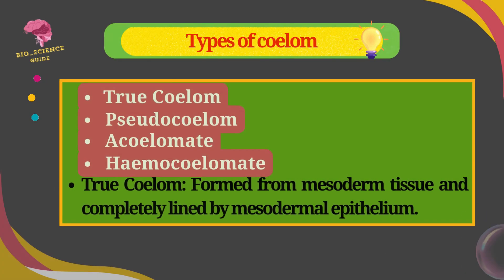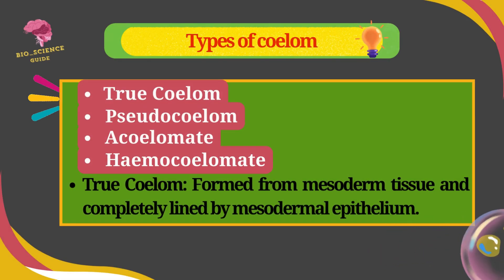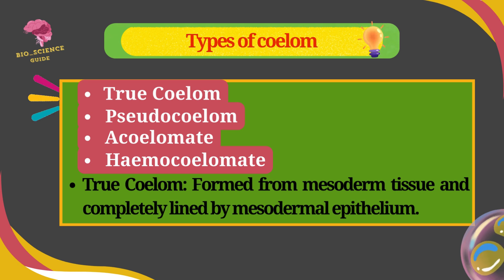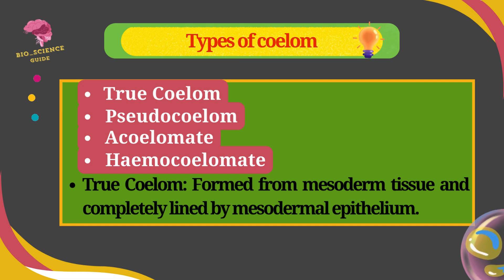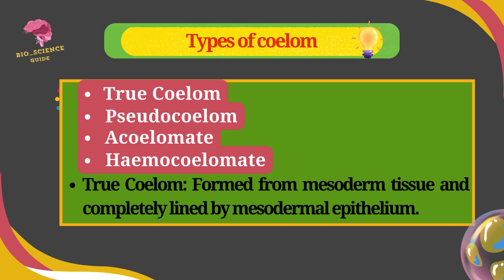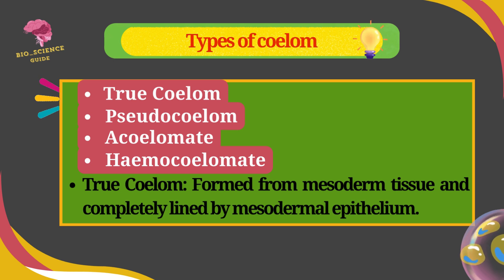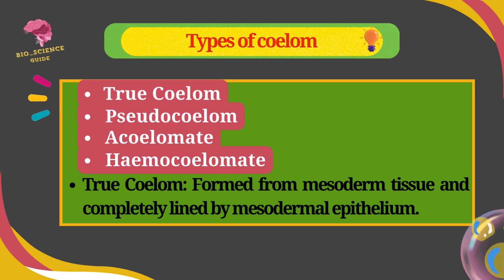The Coelom is of the following types: True Coelom, Pseudocoelom, Acoelomate, and Hemocoelom. The True Coelom is formed by the splitting of mesoderm tissue in embryonic development. It is formed from mesoderm tissue and completely lined by the mesodermal epithelium.